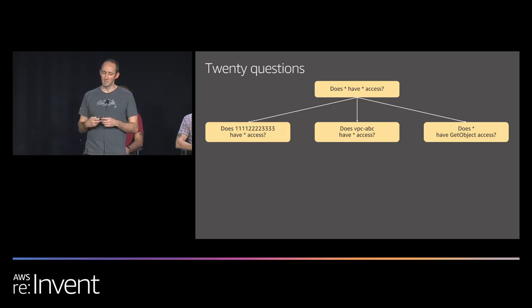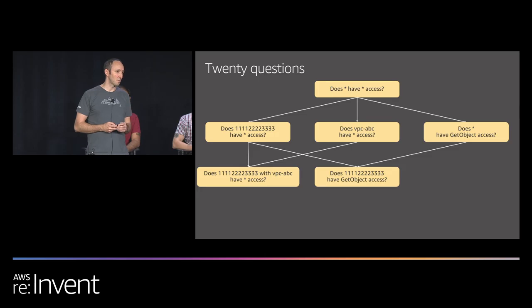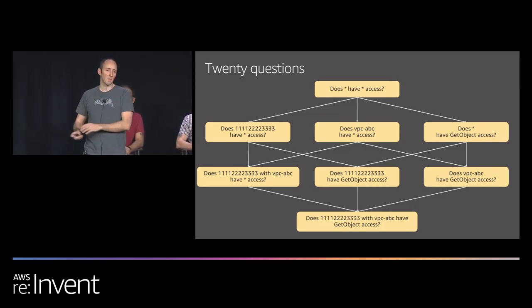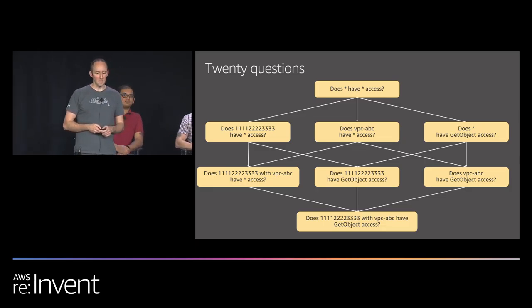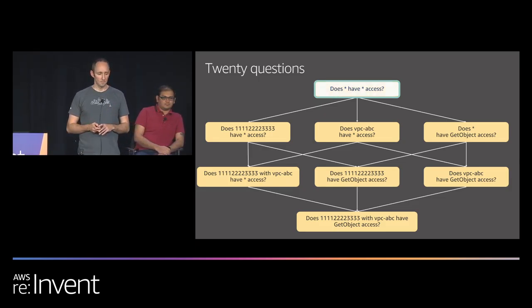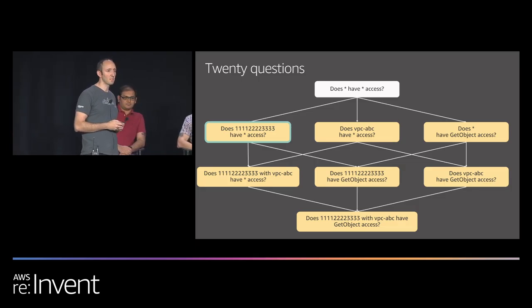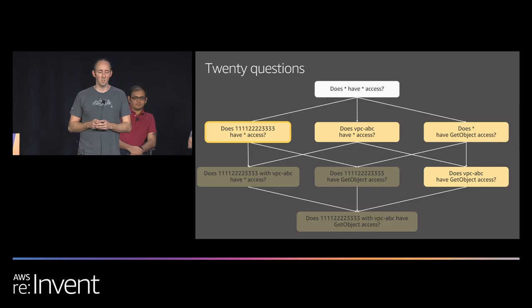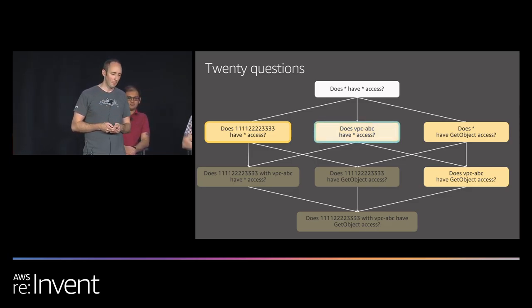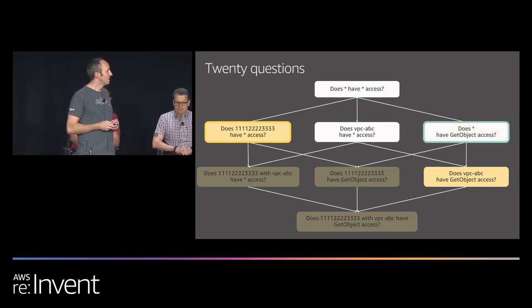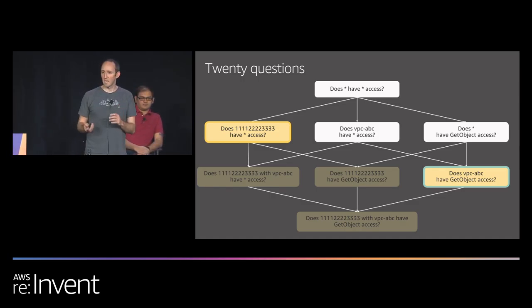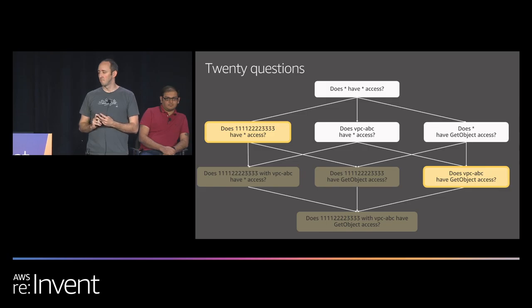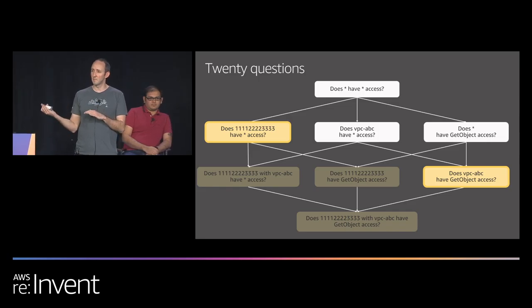In an example: we ask 'does star have star access?' — no. Then we ask 'does 123 have star access?' — yes. Then we don't need to ask anything below that; those are redundant findings. We move on: does ABC have star access? No. Does star have get-object access? No. But does ABC have get-object access? Yes. In this case, there were eight possible questions we could ask and we only had to ask five, generating two findings. That's how we produce findings efficiently and reduce noise and redundant findings customers have to deal with. Now, Access Analyzer doesn't answer 'is this policy what I intend?' — but it changes the question for customers to 'is this finding what I intend?' — a much easier question, since findings are simple declarative statements about who has access to what, with no negation, no denies, no if-exists or for-alls.